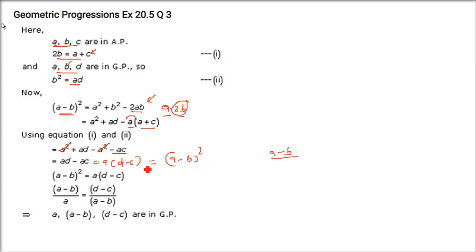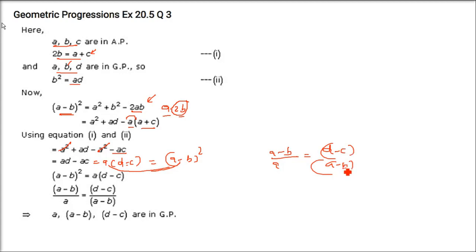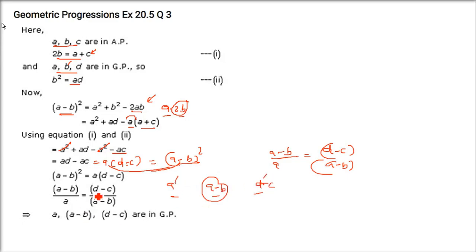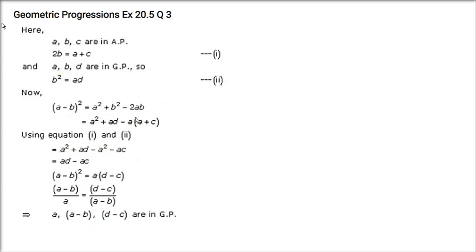Now try to rearrange so that we can get A, A−B and D−C in GP. So (A−B)/A = (D−C)/(A−B). That means (A−B)² = A(D−C), which itself means that A, A−B, D−C are three terms in geometric progression.